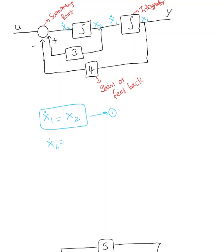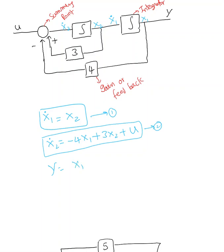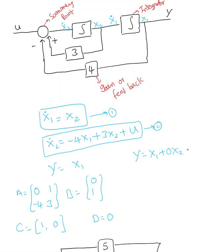Now for x2 dot: looking at x1 first, we have minus 4x1 since there's a minus sign, plus 3x2 since x2 is multiplied by 3, plus u also coming into x2 dot. So x2 dot equals minus 4x1 plus 3x2 plus u. These equations are simple. For the output, y equals x1. Writing this in matrix form: A equals [0, 1; minus 4, 3], B equals [0; 1], C equals [1, 0], D equals 0.